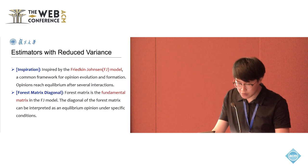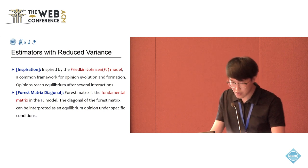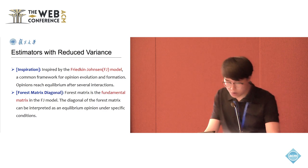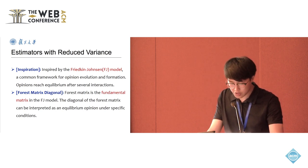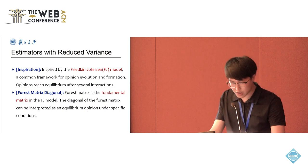Our approach is inspired by the Friedkin-Johnsen model, that is the FJ model. It is a very common framework for opinion evolution and formation. In this model, opinions of agents reach equilibrium after several interactions.